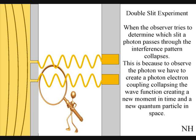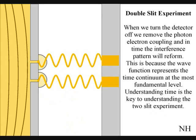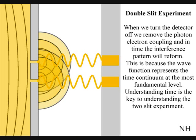This has nothing to do with consciousness. If we turn the detector off, we remove the photon-electron coupling, and in time, the interference pattern will reform.